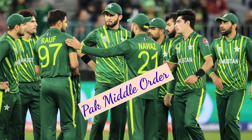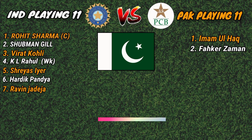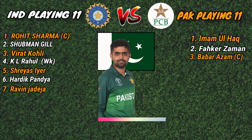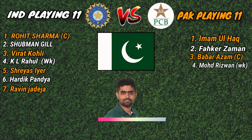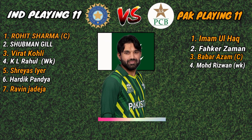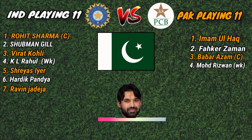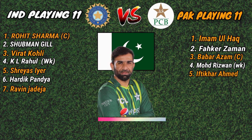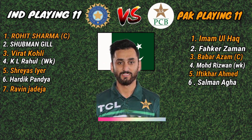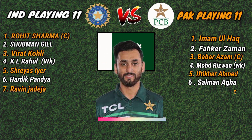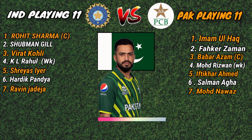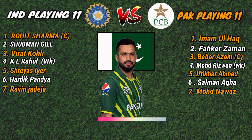Pakistan team middle order. No. 3: Babar Azam, captain and right-hand batsman. No. 4: Muhammad Rizwan, wicketkeeper batsman. No. 5: Iftikhar Ahmed, all-rounder. No. 6: Salim Ali Agha, all-rounder. No. 7: Muhammad Nawaz, all-rounder.